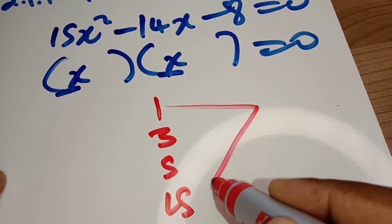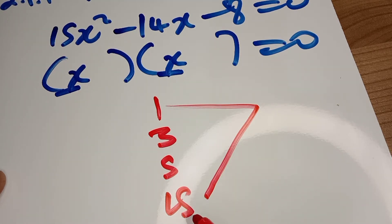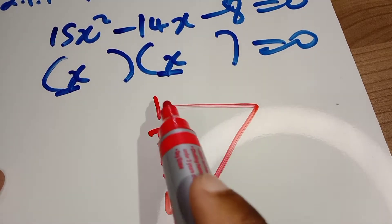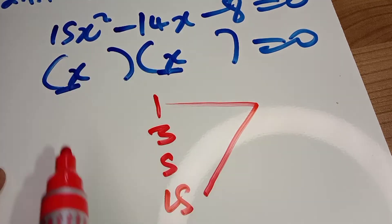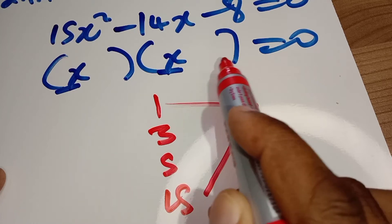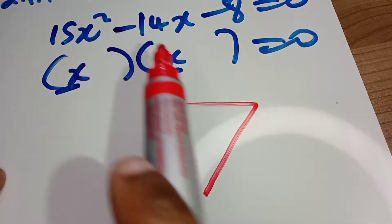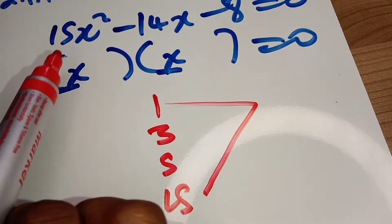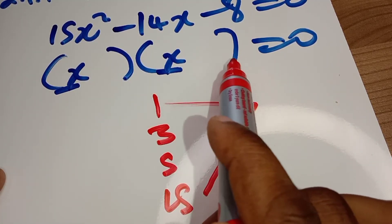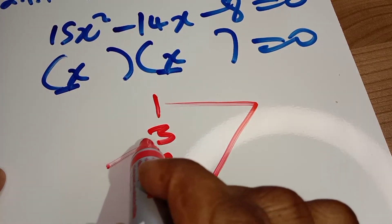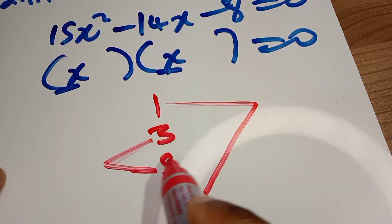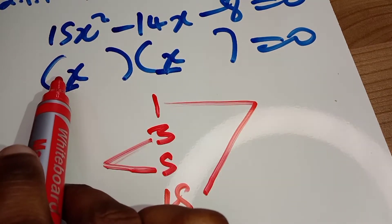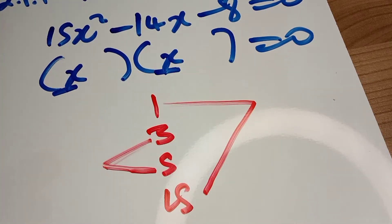One multiplied by 15 gives us 15, so we could choose 1 and 15, but 15 is a bigger number and it's going to heavily affect the middle term, which is 14 — that's not that big. So we'll try three and five because three multiplied by five gives us 15 and these two numbers are reasonably small. We'll put five here and three there.